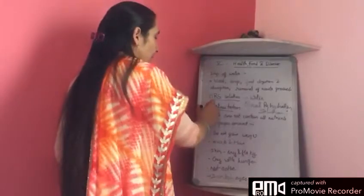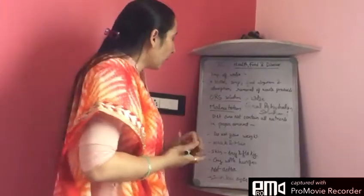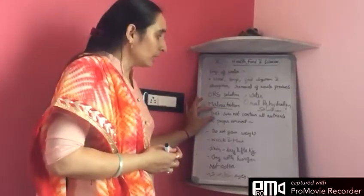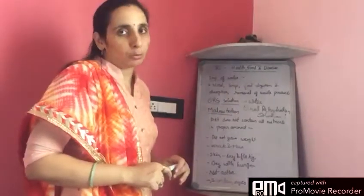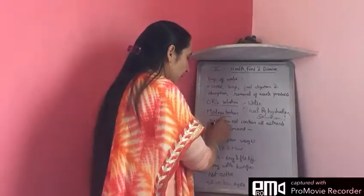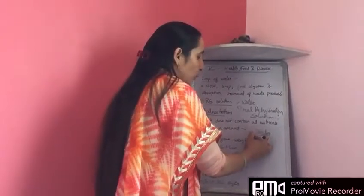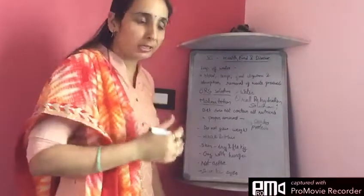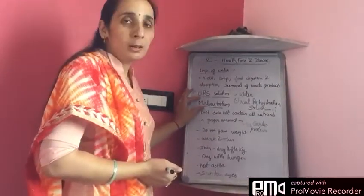Moving on to our next topic: malnutrition. Malnutrition is a condition when a person's diet does not contain all the required nutrients in proper amounts. For example, if a child is having a diet that contains less carbohydrates or less protein than required by the body, they will suffer from a condition known as malnutrition.